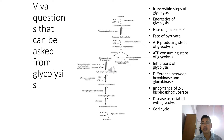Now, ATP-producing steps of glycolysis — we have already seen there are two reactions which produce ATP: one catalyzed by phosphoglycerate kinase and the other catalyzed by pyruvate kinase. These two reactions are examples of substrate-level phosphorylation. That means the ATPs are produced within the reactions themselves, unlike oxidative phosphorylation in the electron transport chain. So they are called substrate-level phosphorylation.